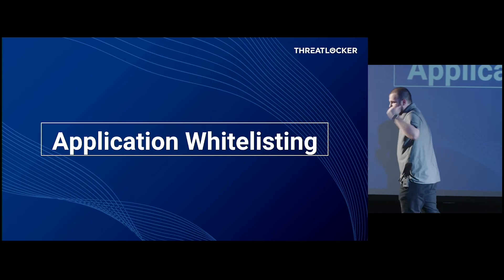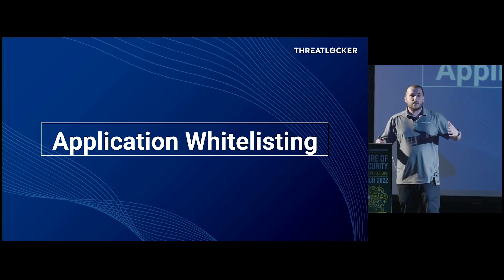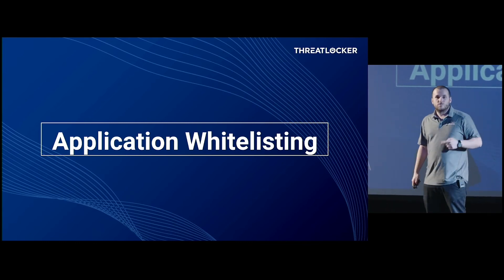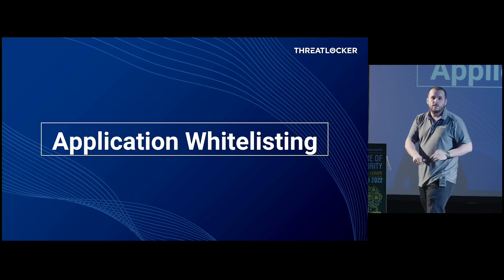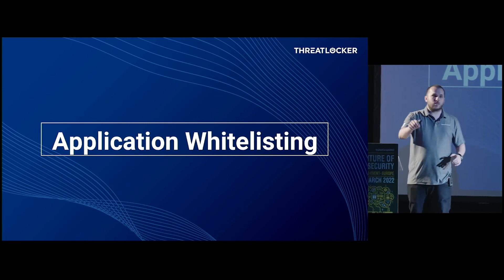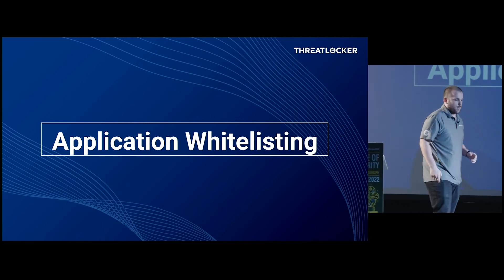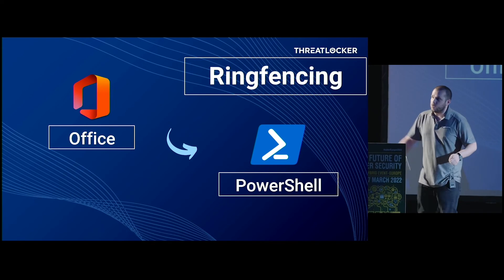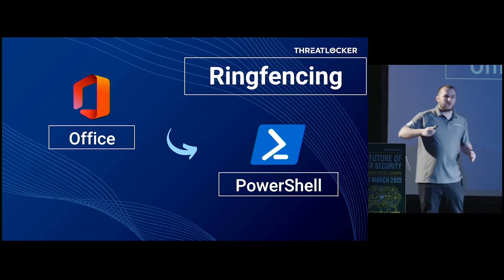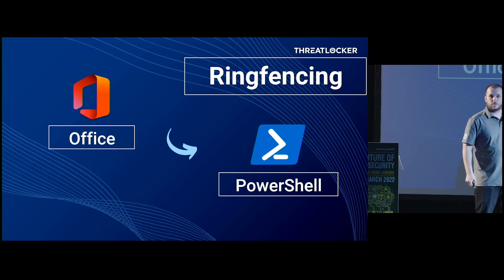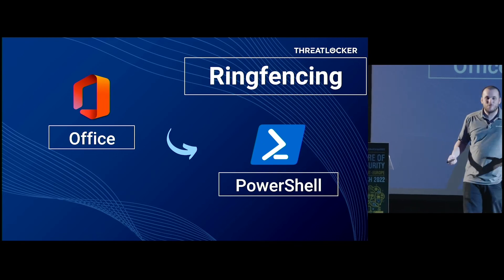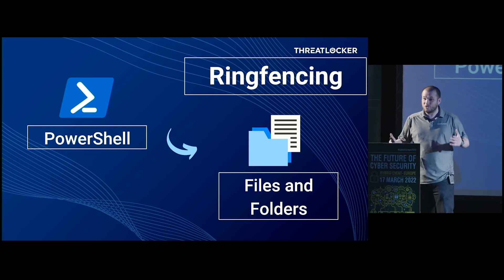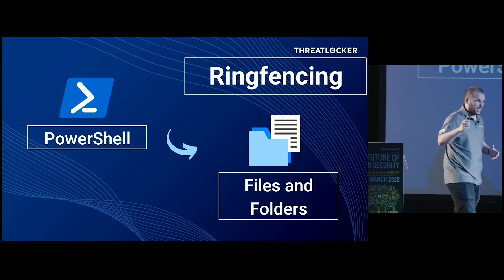The problem we have with networks right now is we're implicitly trusting software that exists. We need to move away from that and move to a deny by default approach. The first way to do that is app whitelisting — look at the applications that exist on your machine, the executables that can run, and only allow those to run. Any new executable that comes in gets denied by default. That is the easiest way to stop any ransomware attack from getting onto your system. Further from there, let's ring fence those apps as well. Did you know Office can call PowerShell by default? But why does Office ever need to call PowerShell, and why does PowerShell need to access my files and folders? It shouldn't — but it can by default.